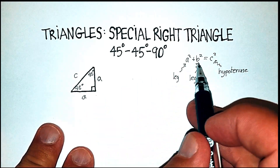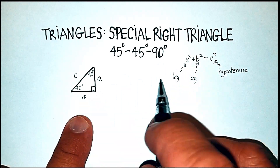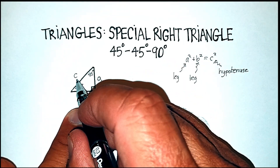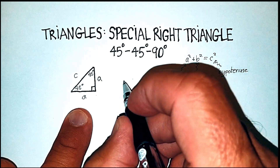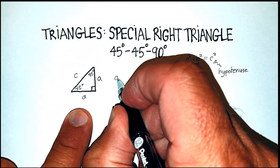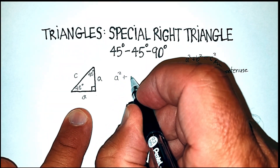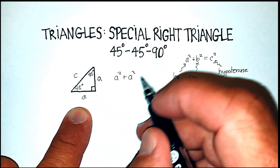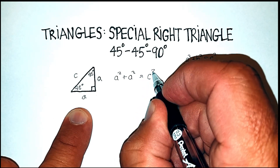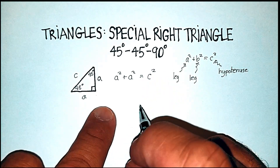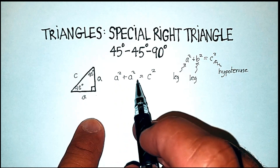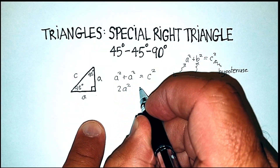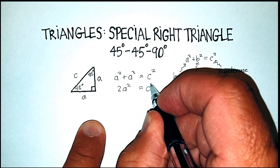So let's apply the Pythagorean theorem to this and see what happens. If we square this side and square this side, the sum of that should equal the square of the hypotenuse. We have a squared, but now instead of b squared, we're going to have a squared again because they're the same length, and it's going to be equal to c squared. So now we have a squared plus a squared — on this side we actually have two a squared — equal to c squared.